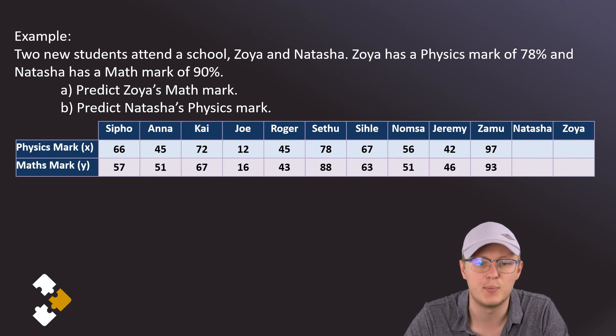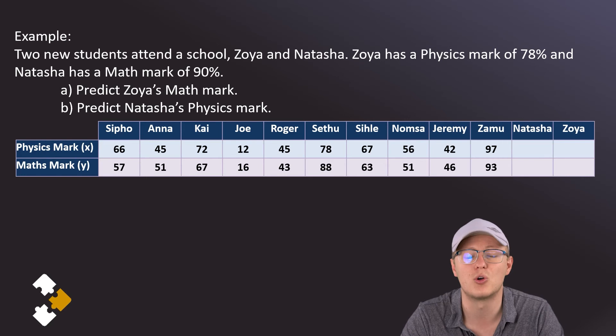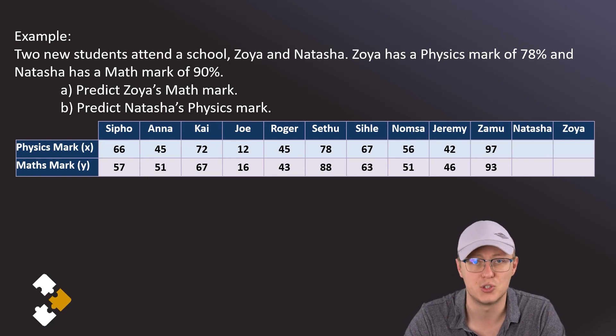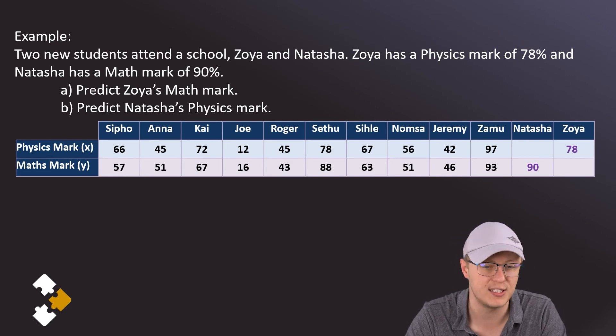So here's our table that we've had previously, and I'm going to add in two more columns for Natasha and for Zoya. Then I'm just going to enter those values that we already know. We know that Zoya gets 78 for physics and we know that Natasha gets 90 for math.